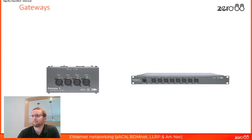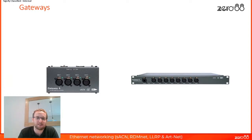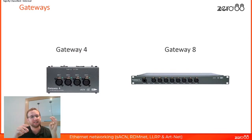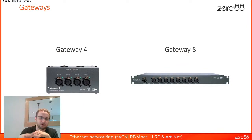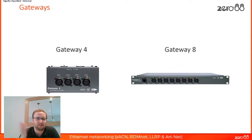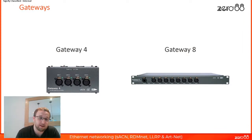A gateway might be a physical device or a piece of software on your laptop converting one Ethernet-based protocol to another. These are two examples of how a gateway might look — the Gateway 4 and the Gateway 8. The Gateway 4 supports four universes of DMX — you send it Artnet or Streaming ACN, and it outputs four universes of DMX: one cable going in, four DMX cables coming out. The Gateway 8 does the same thing with eight universes out. They come in different shapes and sizes — a rack-mount version or a version that attaches straight to your rig.